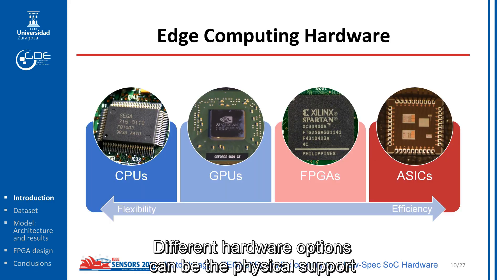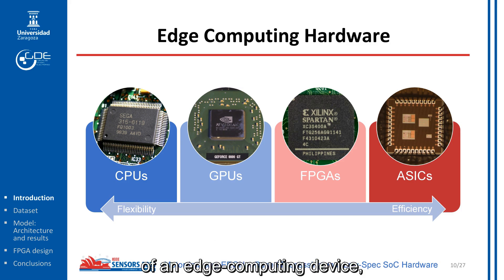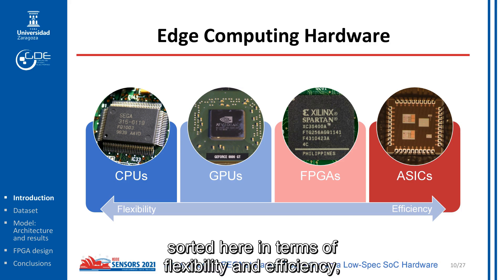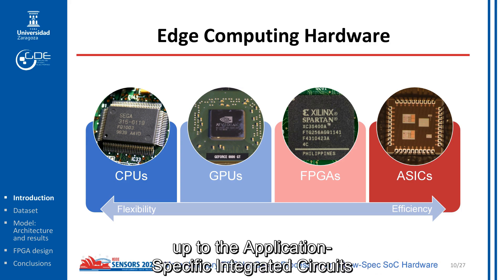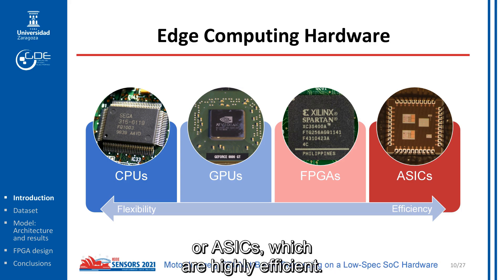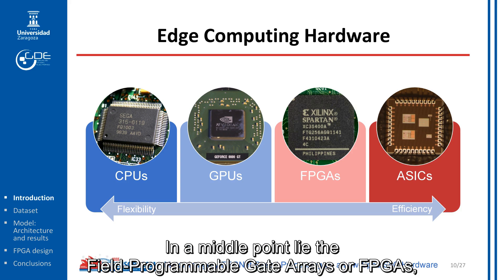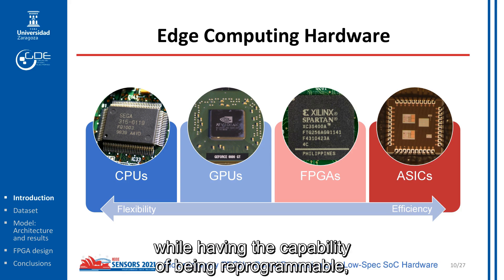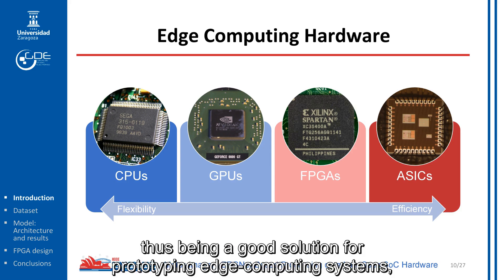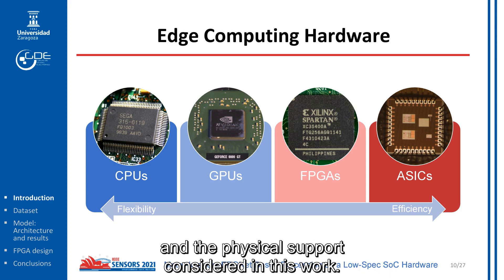Different hardware options can be the physical support of an edge computing device, sorted here in terms of flexibility and efficiency — from CPUs, which are general purpose and parallelism-limited, up to application-specific integrated circuits, or ASICs, which are highly efficient. In a middle point lie field programmable gate arrays, or FPGAs, which allow building logic systems gate-by-gate while having the capability of being reprogrammable, thus being a good solution for prototyping edge computing systems and the physical support considered in this work.